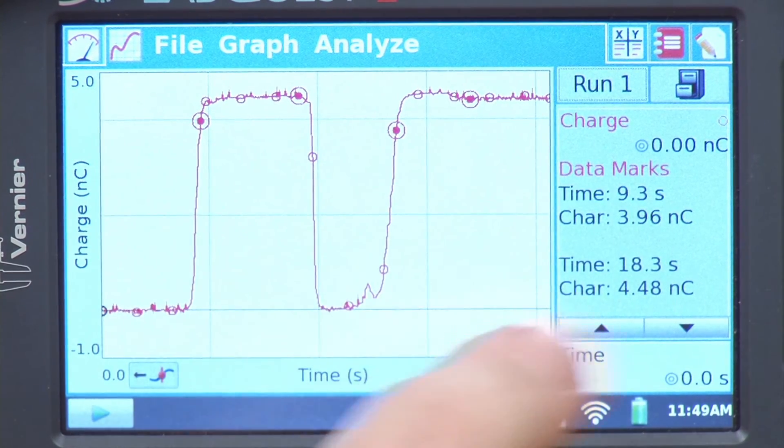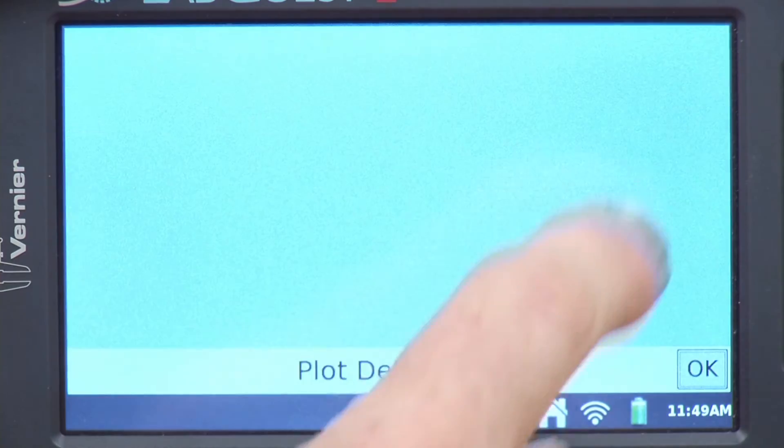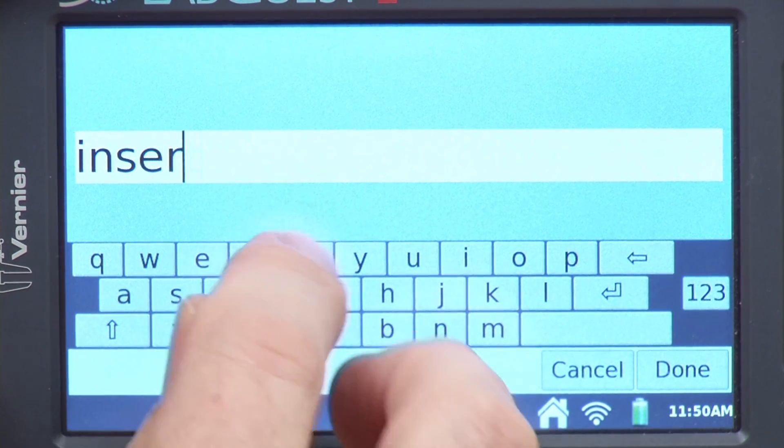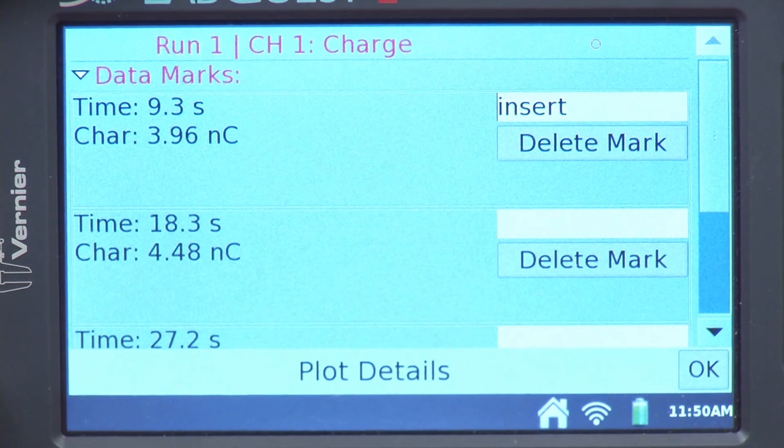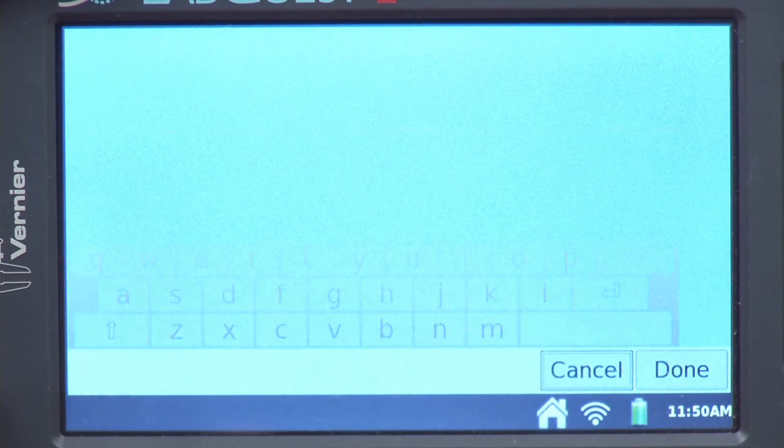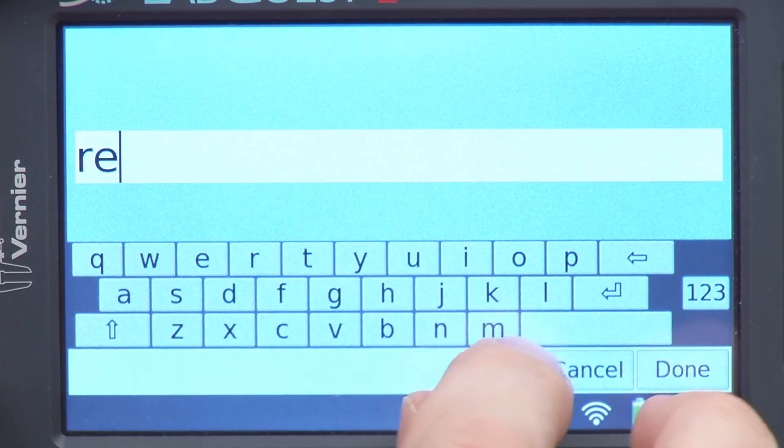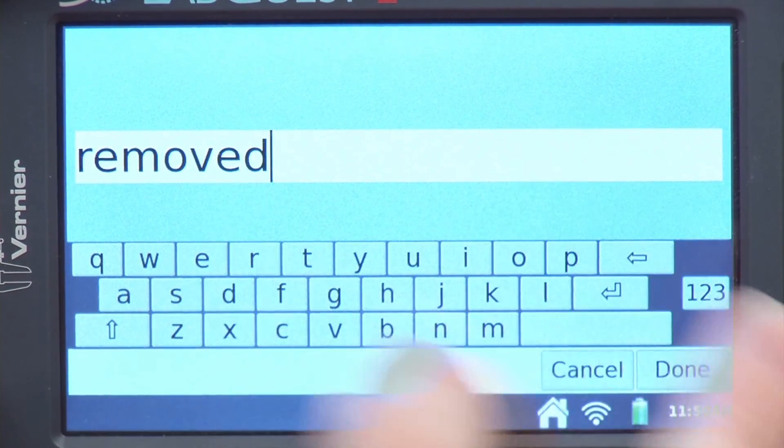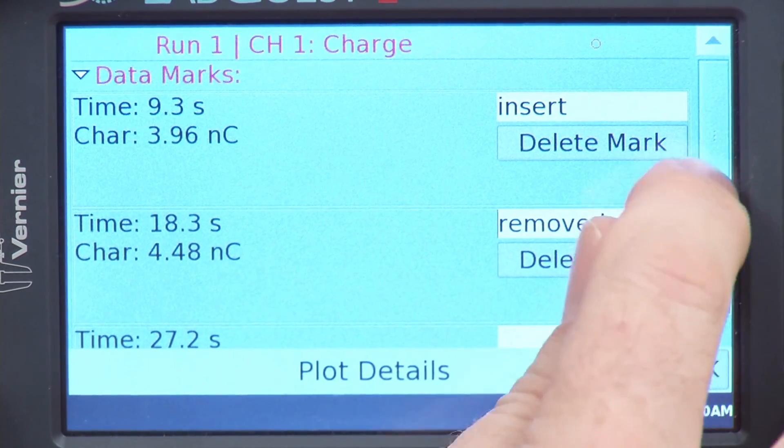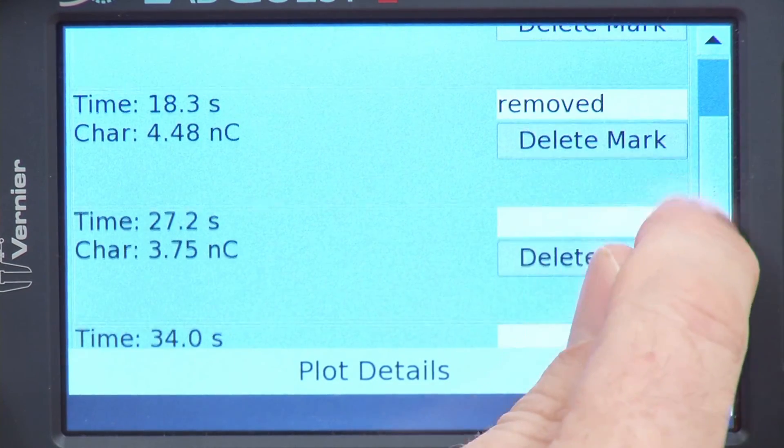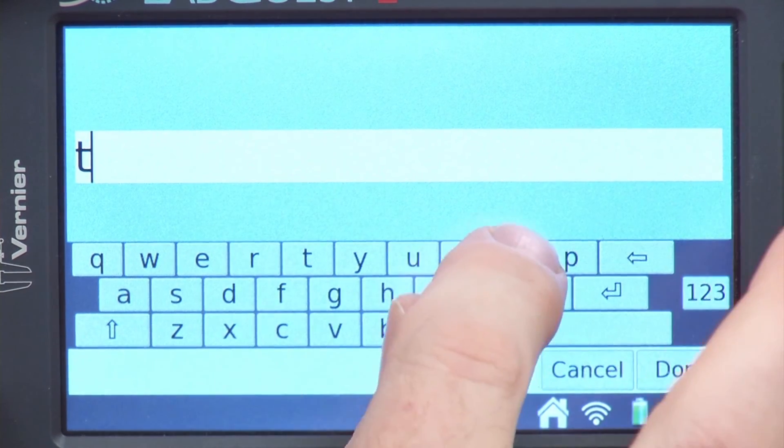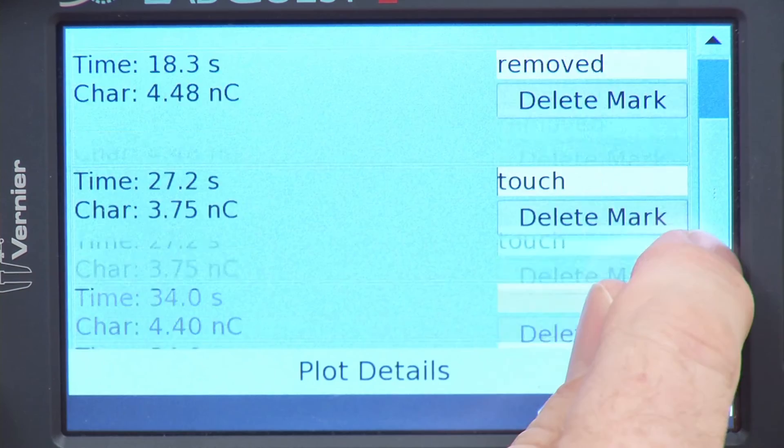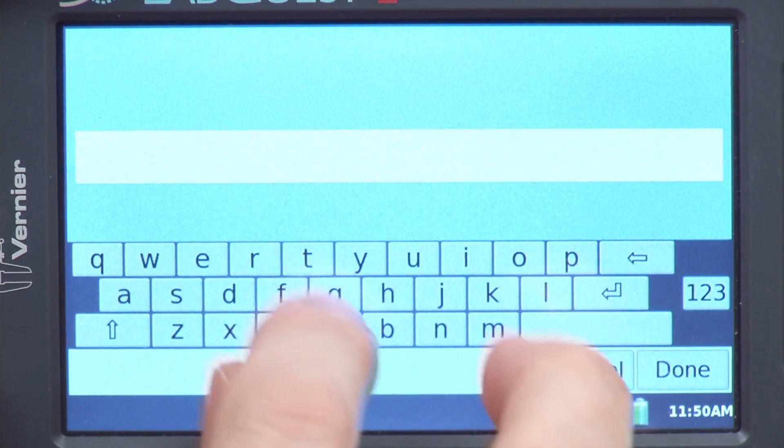Now what I could do is go in and mark these different data marks. I will mark this as insert, done. Then the second one was where I removed it. And the third one, I will say touch, and then remove again.